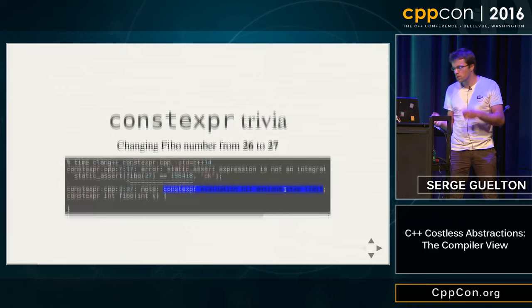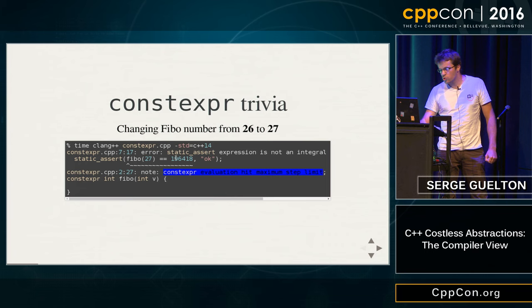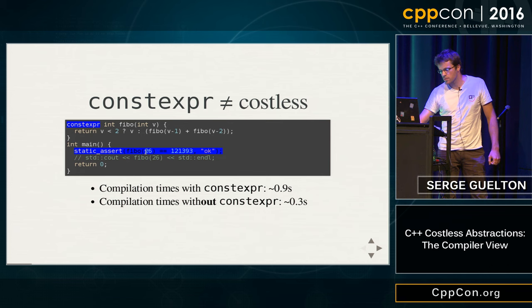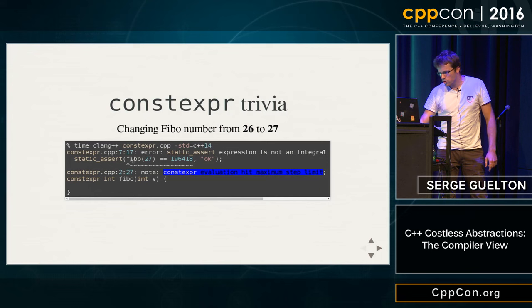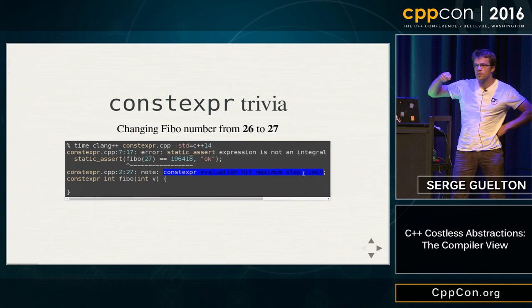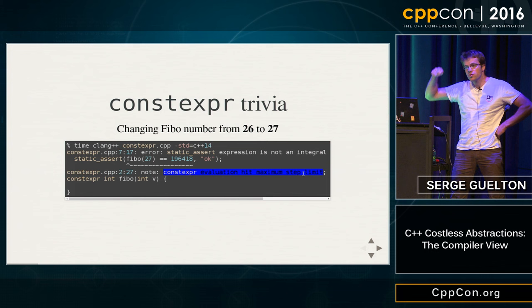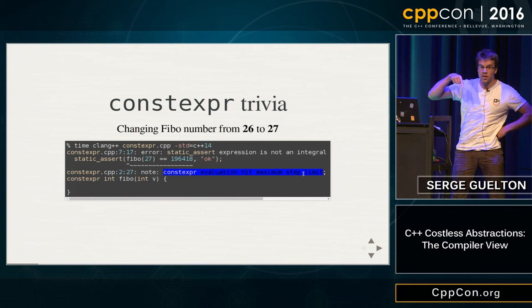If you have a look at how constexpr is implemented, try changing the value from 26 to 27. Because this is a recursion of Fibonacci, you end up doing a lot of things and get an error — not because the static assert is false, but because the evaluation's maximum step limit is reached. This means Clang is, in fact, an interpreter for the C++ language that interprets the whole thing so you can have your fancy constexpr. The cost for the compiler writer is: just rewrite an interpreter for the C++ language. That's huge. But in the end, you don't pay the cost because there's no execution time.